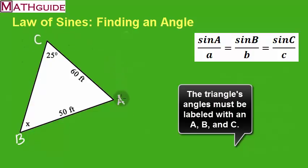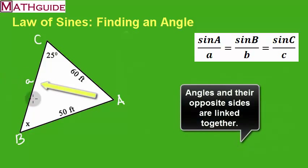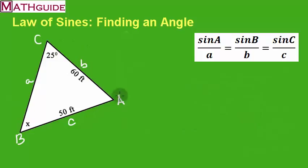it's also known that opposite angle A is little a. Opposite angle B is little b, so the 60 feet is side B. And then here's angle C, so opposite it is side C. So now I have all sides labeled, all angles labeled, now I can use the formula.